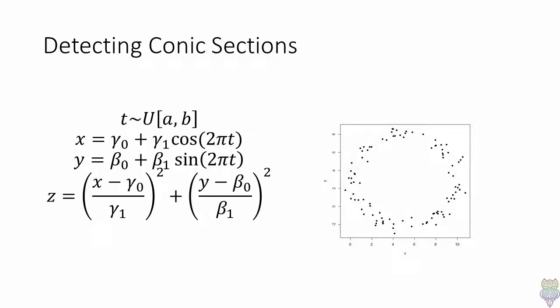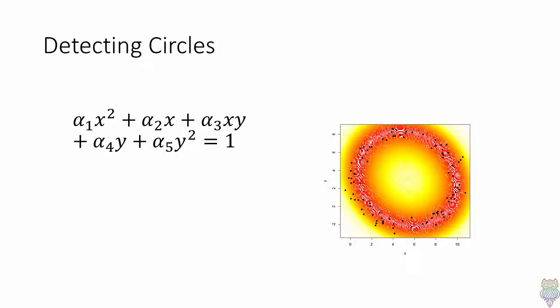This method can also be used to detect conic sections, such as circles. Consider the following simulation: we have two variables changing over time, as illustrated in the picture. Then, if we use non-response analysis, we can fit this model and eventually use it to estimate the radius of the circle, but we can also use it to fit the probability distribution.